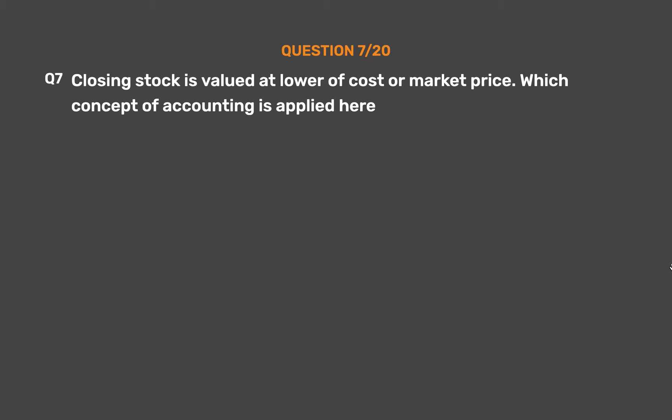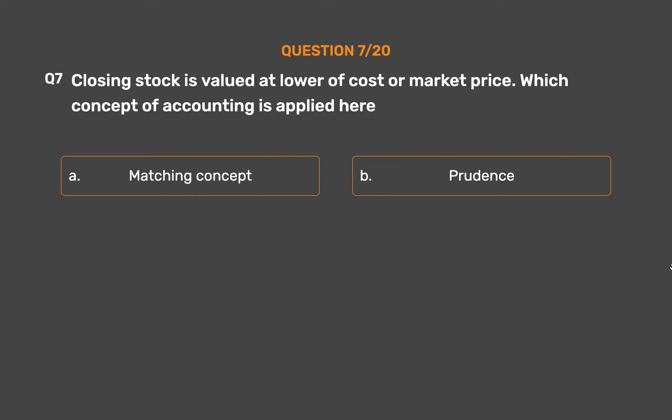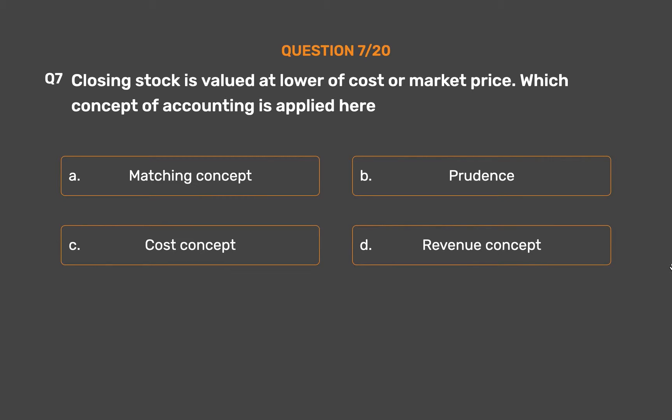Question No. 7: Closing stock is valued at lower of cost or market price. Which concept of accounting is applied here? Option A: Matching concept. Option B: Prudence. Option C: Cost concept. Option D: Revenue concept.